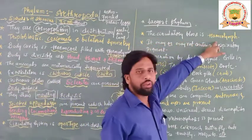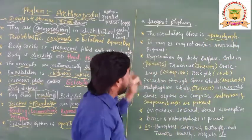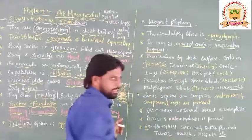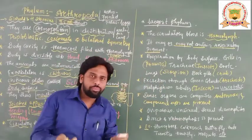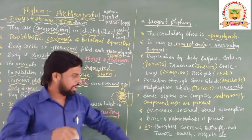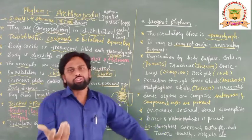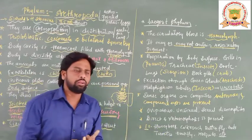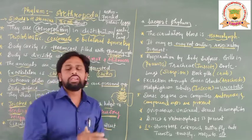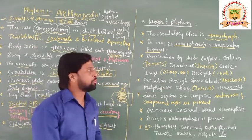The circulatory blood is hemolymph, which may or may not contain a respiratory pigment such as hemoglobin. For example, cockroaches have white (colorless) blood, meaning they lack a respiratory pigment, whereas in some other insects and flies a respiratory pigment may be present.